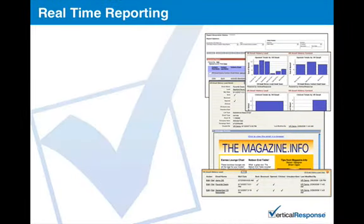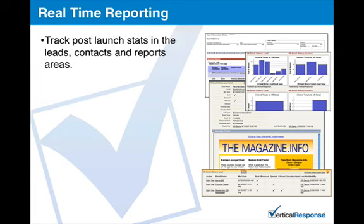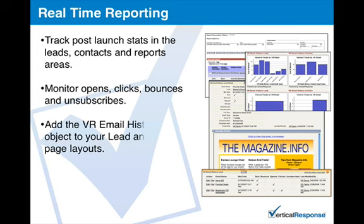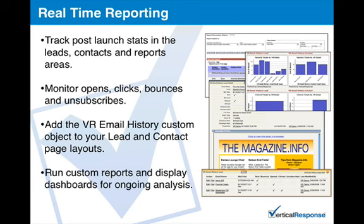The statistics generated by the emails you send out will be updated in your reports area, and in the lead and contact records of your individual recipients. You can see who is opening the email, clicking links, whose email address has bounced, and who has unsubscribed. By adding the VR Email History custom reporting object to your lead and contact page layouts, you can view email statistics on the level of individual records. And with custom reports and dashboards, you can analyze the performance of your emails over time.